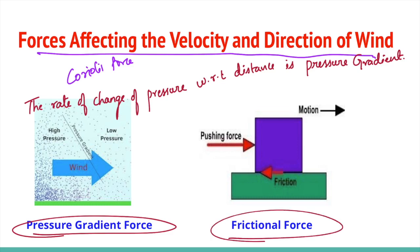Frictional force affects the speed of the wind. It is greatest at the surface and its influence generally extends up to an elevation of one to three kilometers. Over the sea surface, friction is minimal.